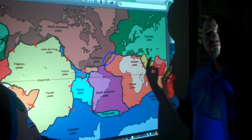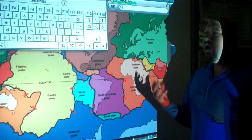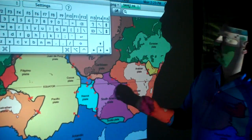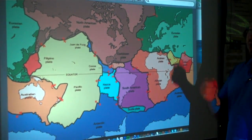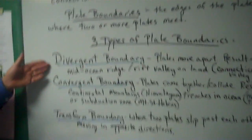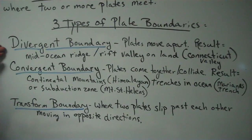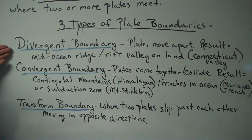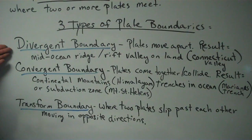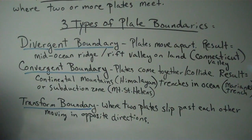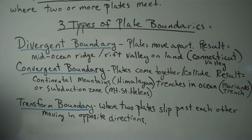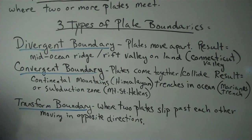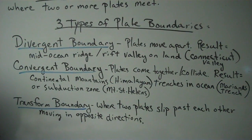Now there are three main types of plate boundaries — it has to do with their movement. First, you have divergent plate boundaries, when plates move apart. Both of the plates are moving apart from each other. The result, in a mid-ocean ridge if it's in the ocean, or if it's on land, it creates a rift valley. The most famous rift valley is actually in Africa, the eastern part — Ethiopia specifically.